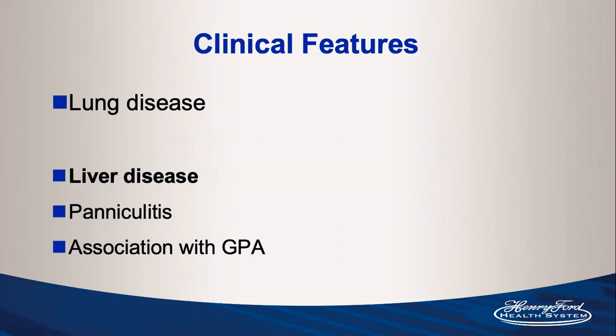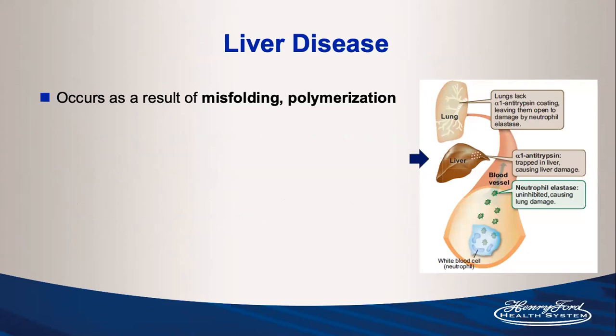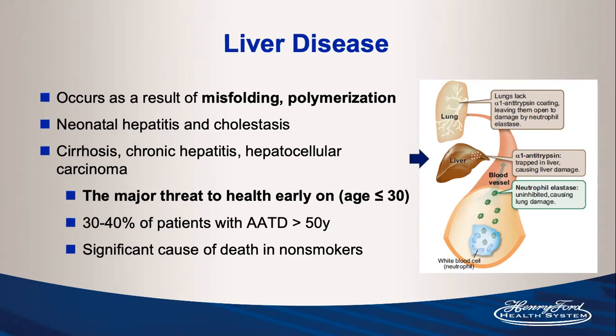Liver disease is very common and results from misfolding and polymerization causing direct injury to hepatocytes. It can start very early with neonatal hepatitis and cholestasis, and complications in adulthood include cirrhosis, chronic hepatitis, and even hepatocellular carcinoma. If a patient dies from alpha-1 antitrypsin disease under age 30, it is generally due to liver disease. Around a third of patients living past 50 will have significant hepatic complications, and for non-smokers, liver disease is the primary cause of morbidity and mortality.